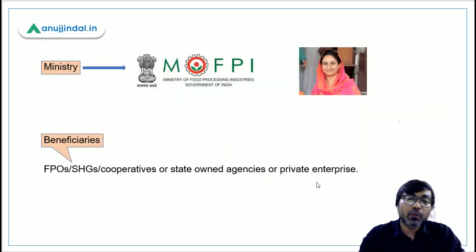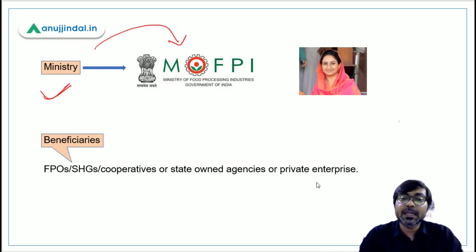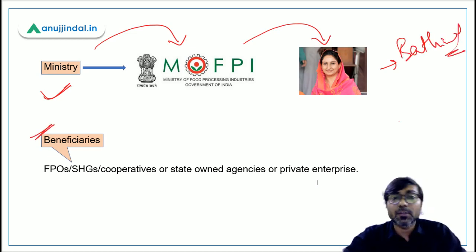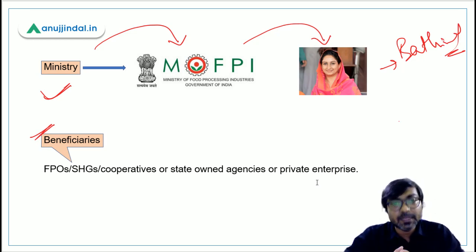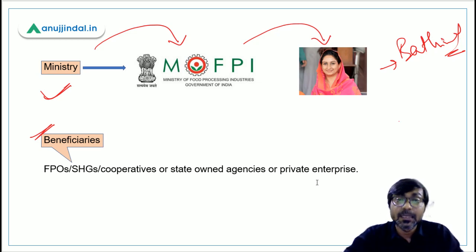The ministry responsible is clearly the Ministry of Food Processing Industries, headed by Harsimrat Kaur Badal, whose Lok Sabha constituency is Bathinda in Punjab. The beneficiaries include all stakeholders related to micro food processing — private enterprises, state-owned agencies, Farmer Producer Organizations, Self-Help Groups, cooperatives, and all related organizations are covered under this scheme.